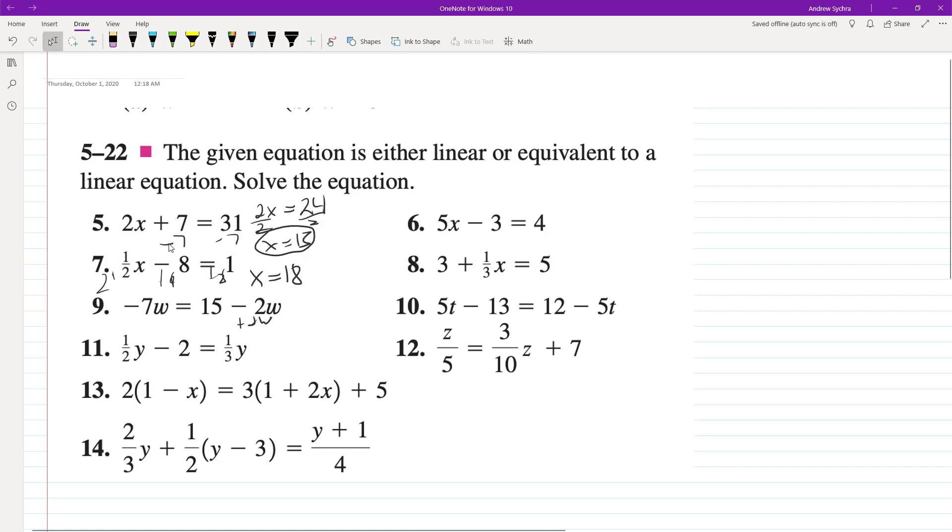So here, we add 2w. We get negative 5w equals 15. Divide by negative 5, we get x, excuse me, w is equal to negative 3.